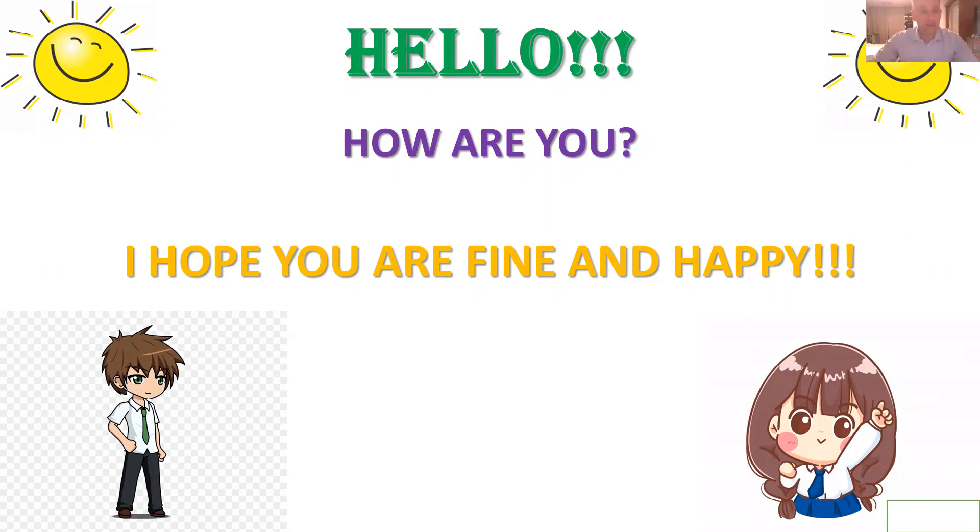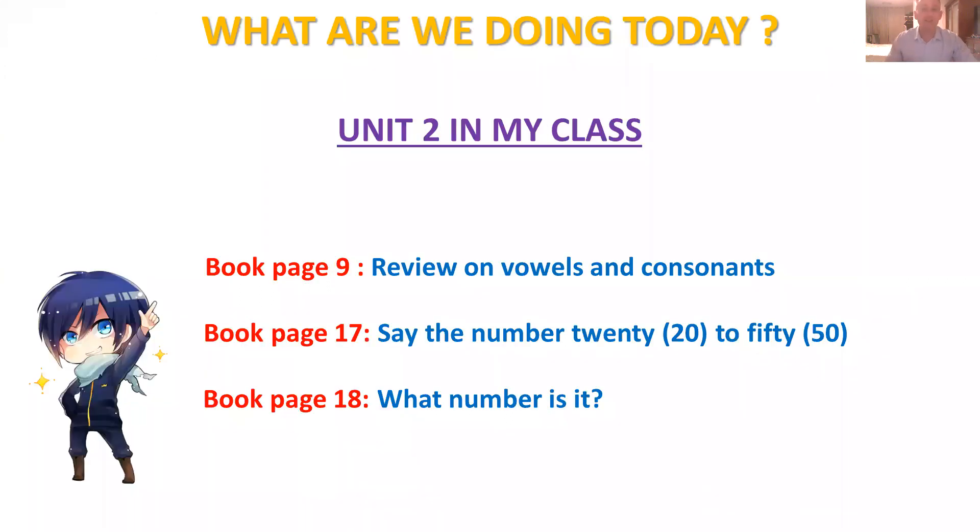Okay, so today we start a new lesson. So let's take a look at that. What are we doing today? We continue on unit 2 in my class. First you will open your book page 9. We will make a review on vowels and consonants. Then on page 17, we will count together 20 to 50. And last thing, you will open your book page 18. And you will guess, you will tell me what number is it. Okay, we go you are ready. Let's go.